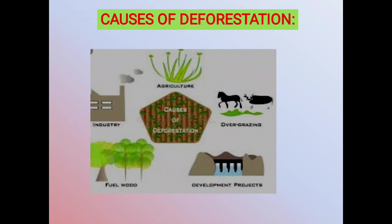Each year, up to 15 million hectares of forest are cleared in the tropics and the land is used for other purposes. World's forest cover is shrinking rapidly. In developing tropical countries, about 40% of forest land has been degraded. However, temperate forests have lost only 1%.